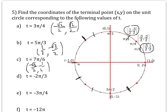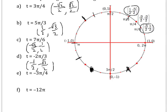For t = −3π/4, the reference is π/4 and we're in the third quadrant, so both coordinates are negative: (−√2/2, −√2/2). For t = −12π, that's just wrapping around the unit circle six times clockwise, which brings us right back to (1, 0).